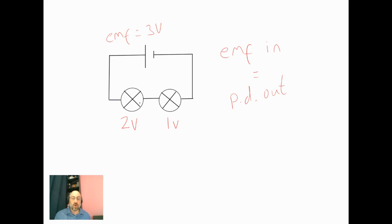Now, don't worry too much about why this one got two volts and why this one only got one volt. That's connected to the resistance of the bulbs, and we'll get to that in a later video. But for now, I really need you to understand that EMF in equals potential difference out.